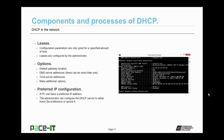Part of the DHCP process are what are called leases. The DHCP server hands out IP configuration information, but it sets a time limit for how long that IP configuration is good — this is called the lease. The parameters are only good for a specified amount of time, and the administrator can configure how long the leases are.